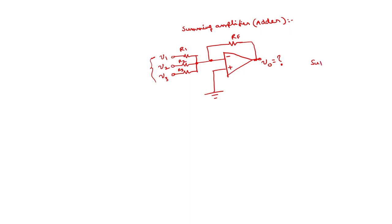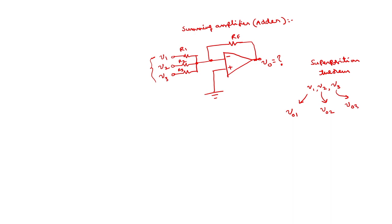The superposition theorem states that the output due to several sources can be found by considering each source separately. With three sources V1, V2, V3: V01 is the output due to V1 only, V02 is the output due to V2 only, and V03 is the output due to V3 only. According to the superposition theorem, the total voltage V0 equals V01 plus V02 plus V03.